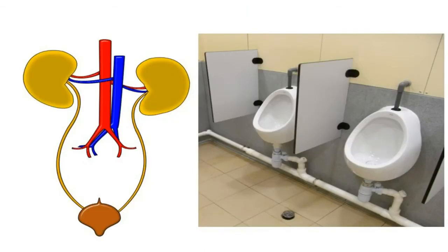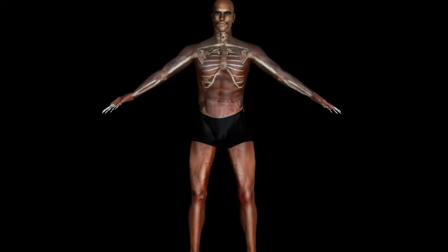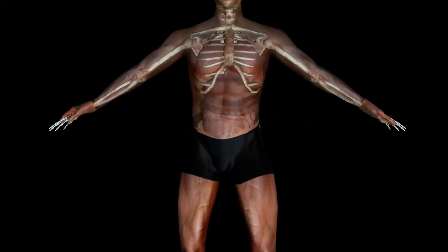So we have to get those harmful things out of our body. You do exactly that when you pee — that is, when you urinate. Now, how is urine formed? Urine is formed in our kidneys.